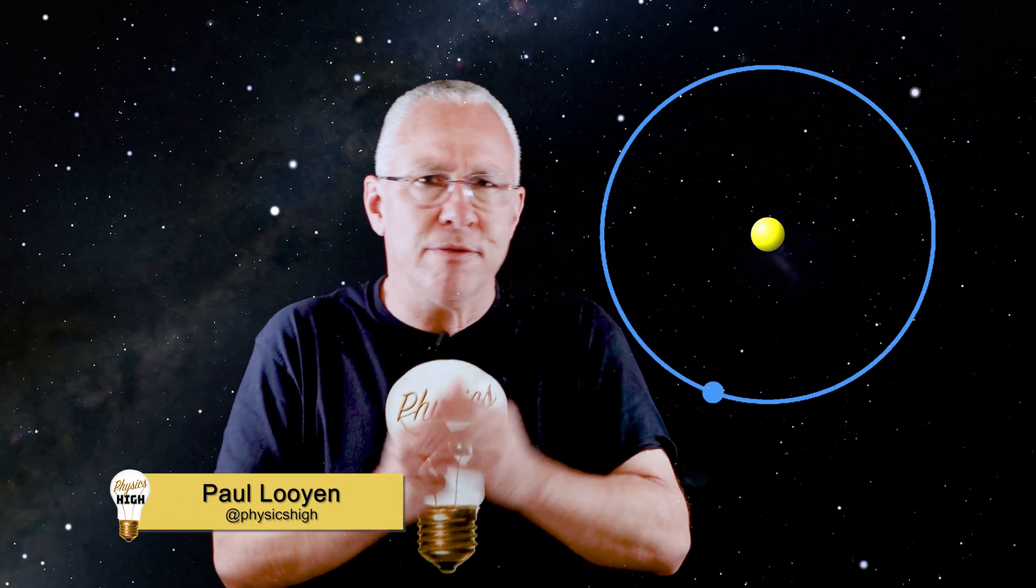What if I told you that the planets don't move in circles? For thousands of years, astronomers believed the heavens were perfect and circles were the perfect shape. I mean, who doesn't love a circle? It's neat, it's symmetrical, but it's wrong.